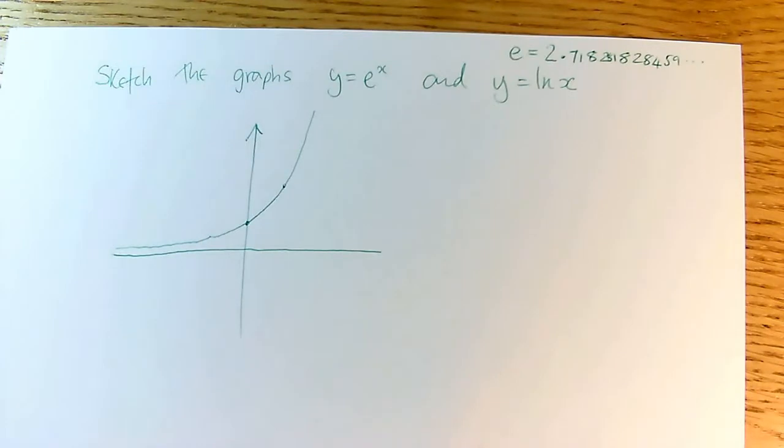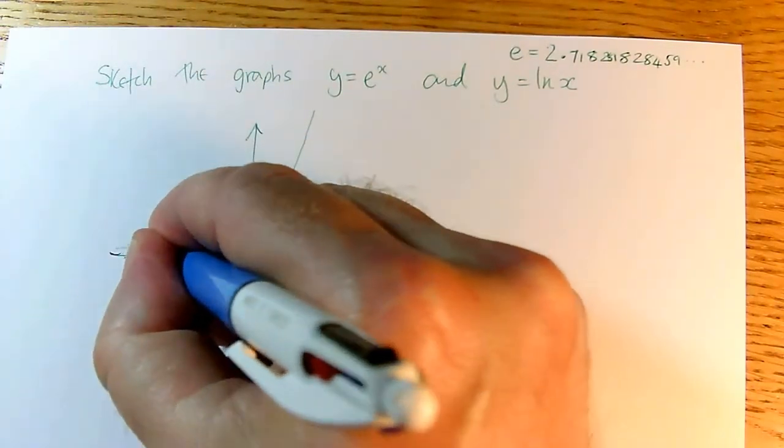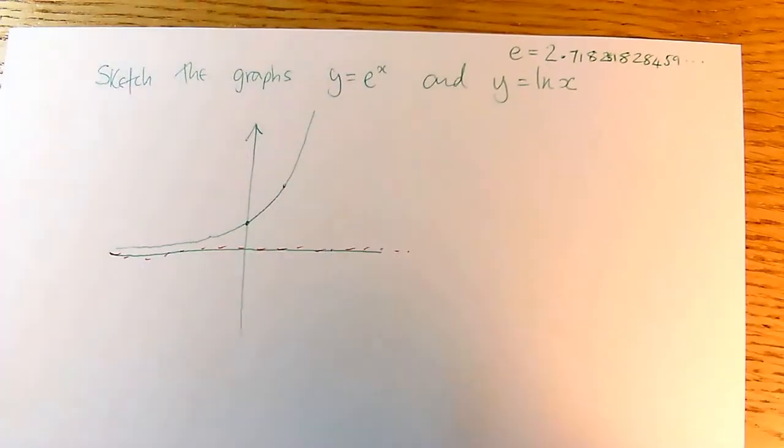So we say that the x-axis here, the line y equals 0, is an asymptote. So that's a graph of y equals e to the x. It looks quite a lot like y equals 2 to the x.